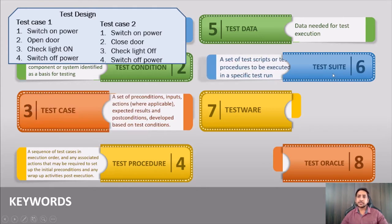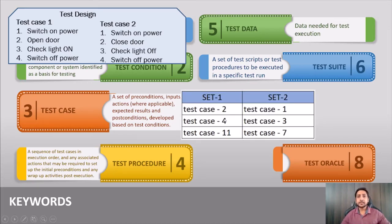Test suite is a set of test scripts or test procedures to be executed in a specific order or in a specific test run. You can have multiple test cases — say test case 1 through 11 — and in a test suite you group them. When you execute the first test suite, only test cases 2, 4, and 11 will be executed. When you select the second test suite, test cases 1, 3, and 7 will execute. Grouping test cases this way is called a test suite.